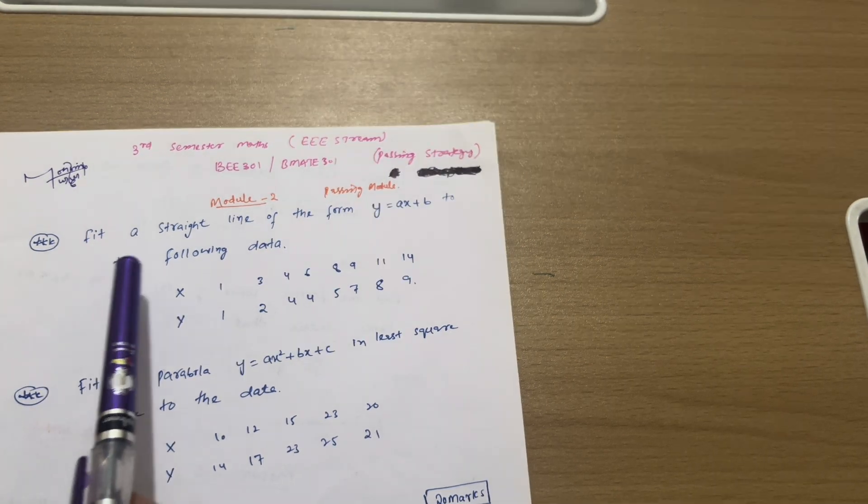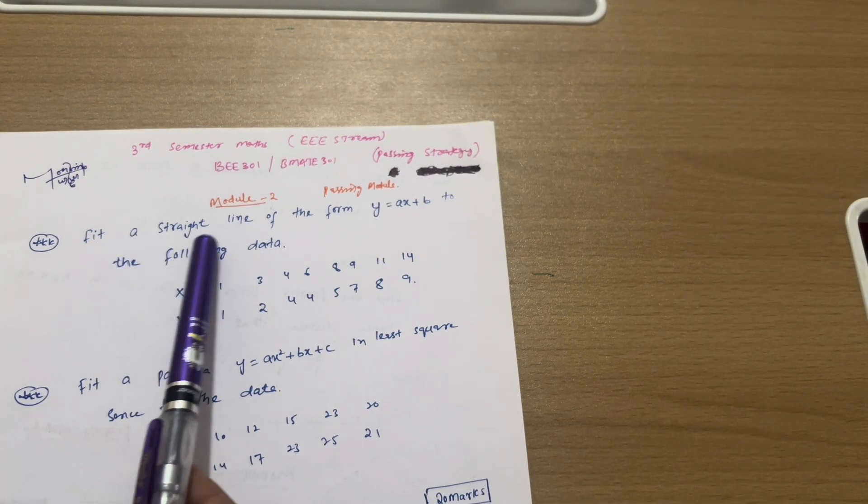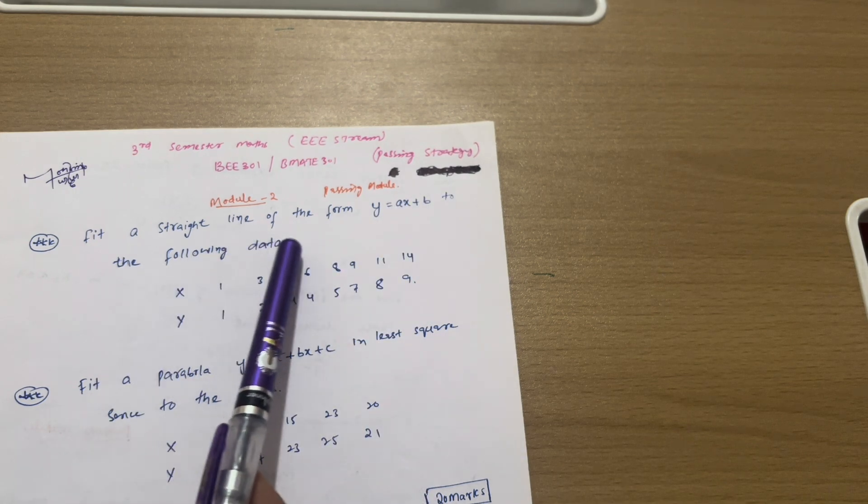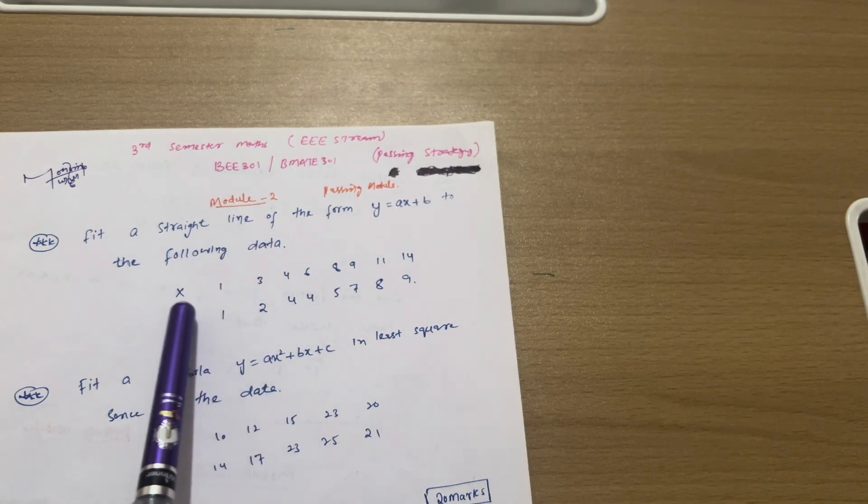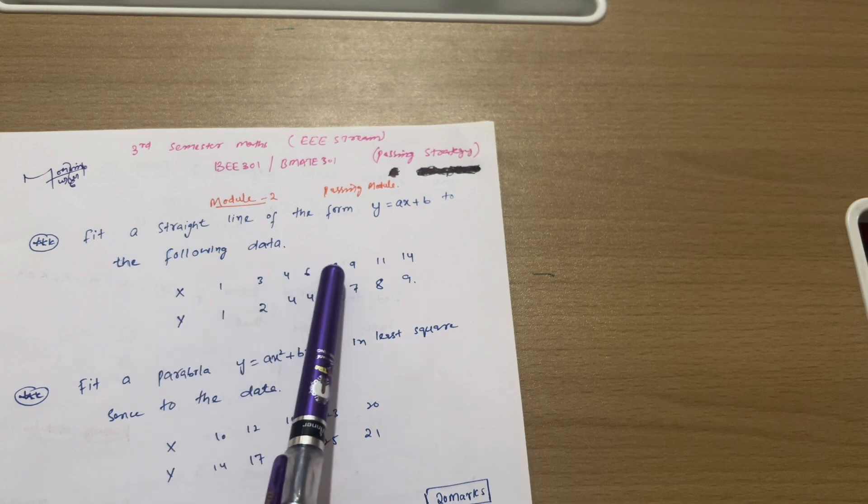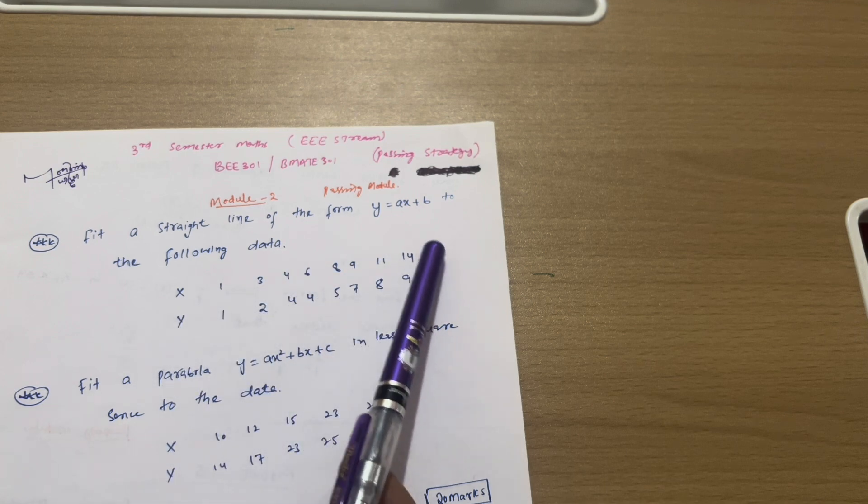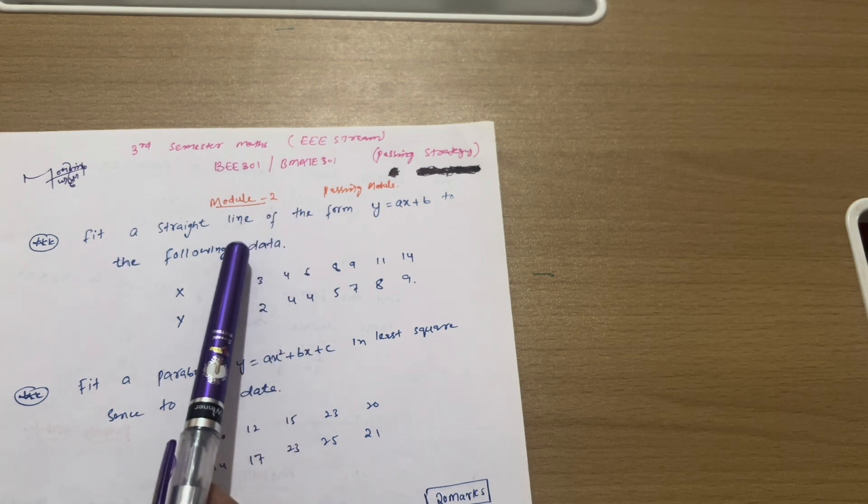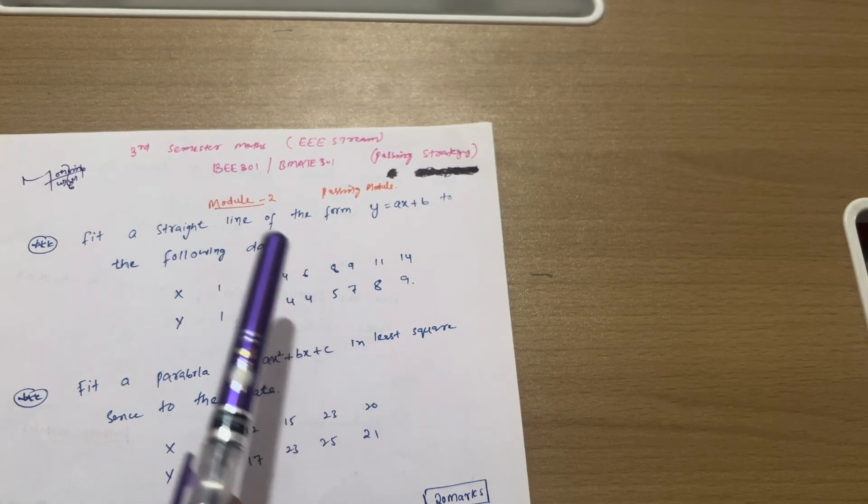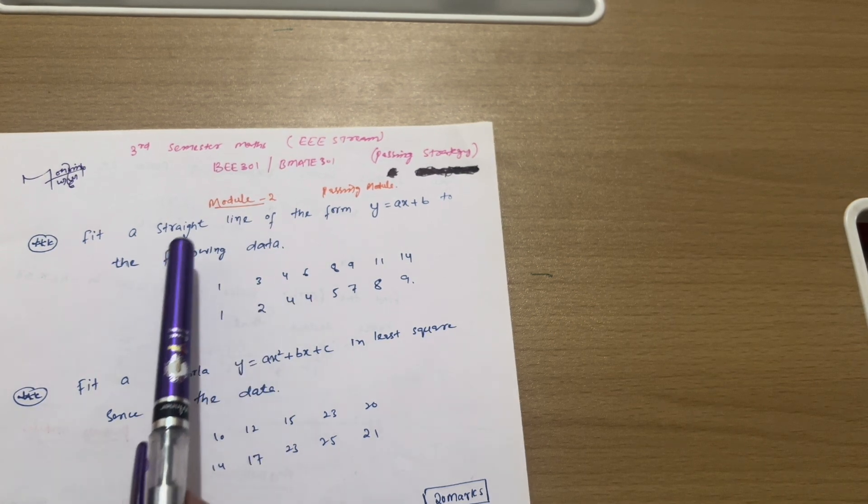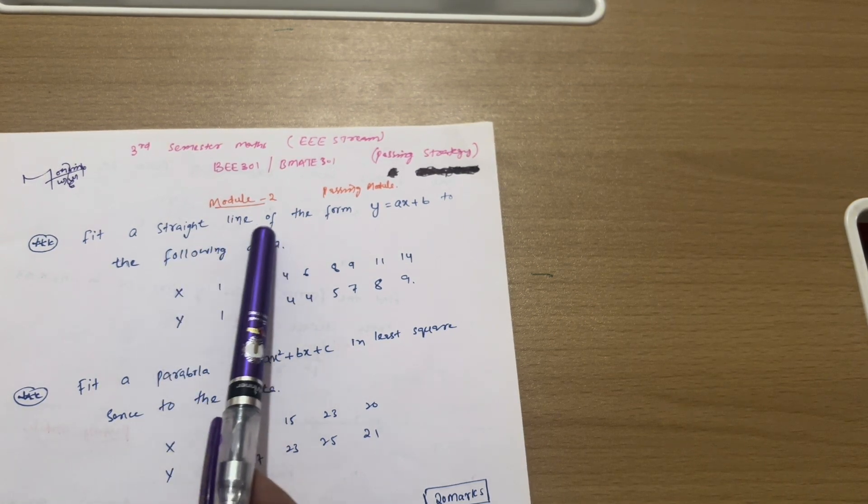First of all, go through these straight line problems that is fit a straight line of the form y equals ax plus b to the following data. So here I have taken the data x and y values: 1, 3, 4, 6, 8, 9, 11, 14 and 1, 2, 4, 4, 5, 7, 8, 9. Data will be somehow changed but the concept will be same. Definitely there will be 8 or 7 marks on this particular straight line. As videos are available, you can refer my solving video on this particular concept.